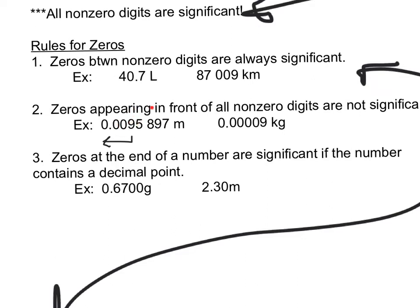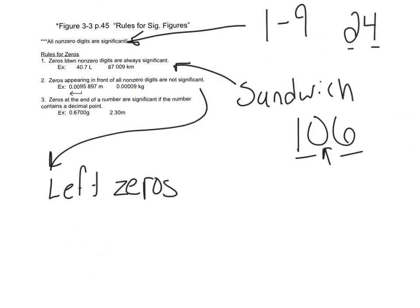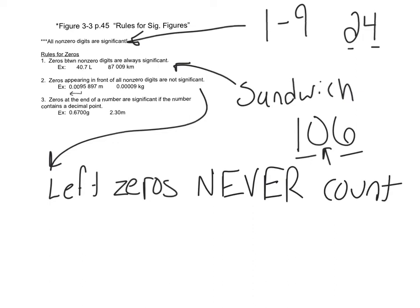So that number has 1, 2, 3, 4, 5 significant figures. Left zeros never count. Any zeros to the left are never going to count. In the second example, all those zeros don't count because they're to the left of that 9 — all the zeros in the front don't count.